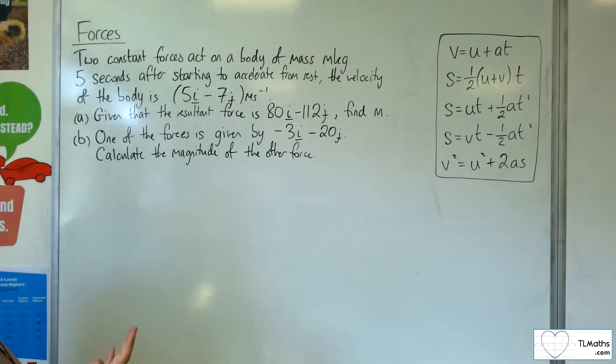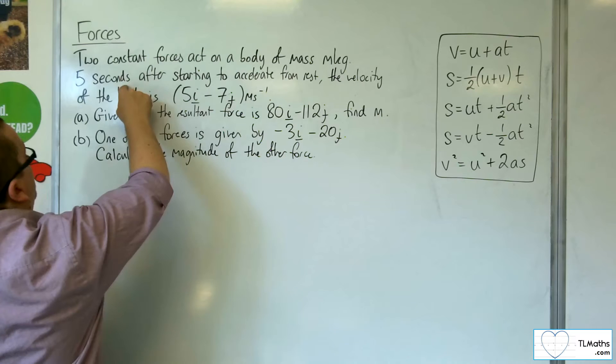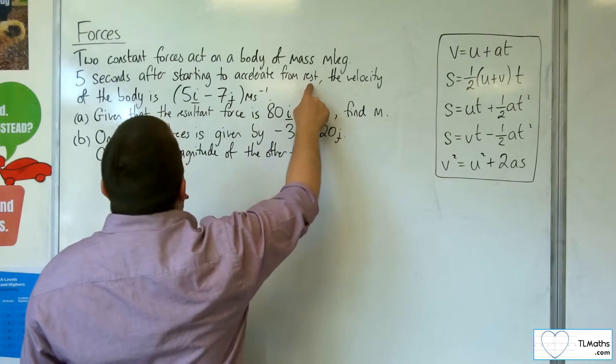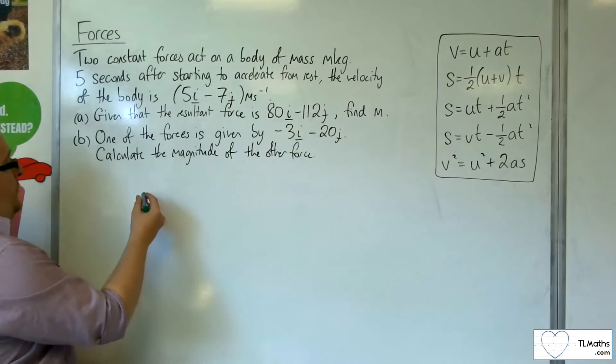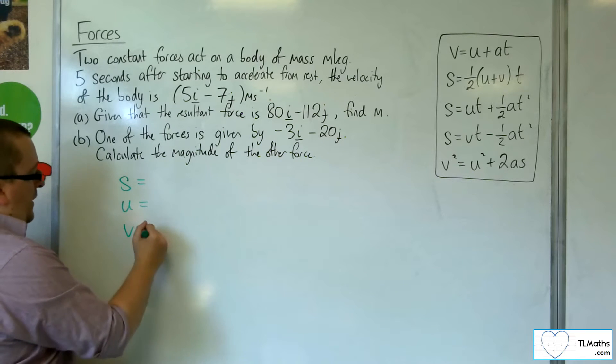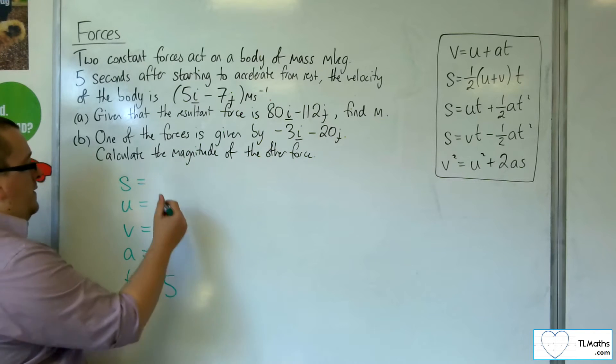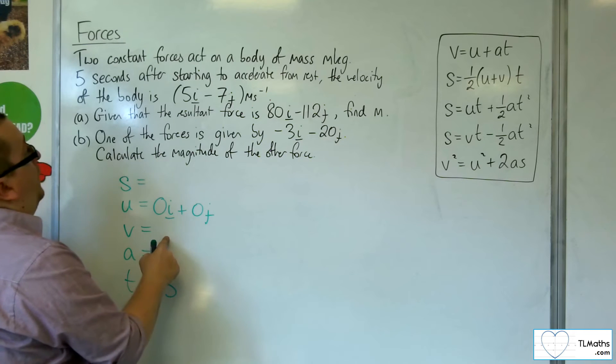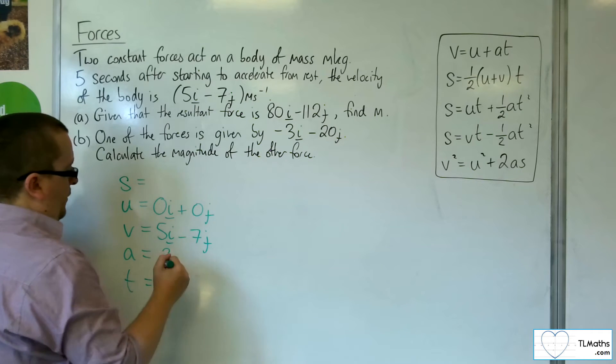In order to find the acceleration, I'm going to have to think about what I've got in this first bit here. I'm told the time. I know that we're accelerating from rest, so the initial velocity is 0, and the final velocity is 5i minus 7j. So I've got three pieces of information there for SUVAT.